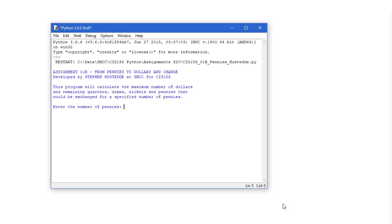And here's my sample program running in the IDLE editor. Again, I'm going to show the name of my file or program who developed it. A little bit about it. This program will calculate the maximum number of dollars and remaining quarters, dimes, nickels, and pennies that we exchanged for a specified number of pennies. Let's say Stacy has twelve hundred and sixty-seven pennies in the jar. I'm going to press the enter key. And I'm told that would be twelve dollars, two quarters, one dime, one nickel, and two pennies.